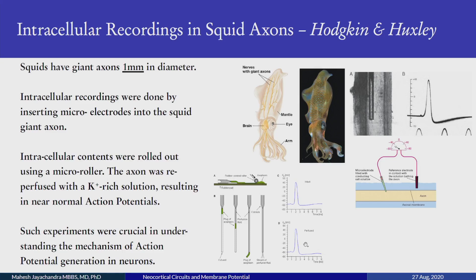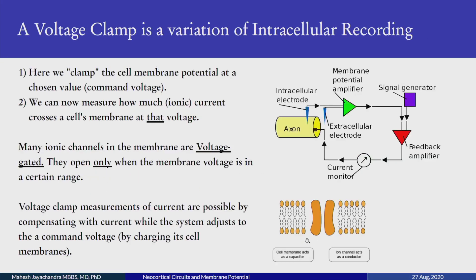These experiments were crucial in understanding the mechanism of action potential generation in neurons. Further, Hodgkin and Huxley developed a voltage clamp technique, which is a variation of intracellular recording. Here we have the electrode inside and we clamp the cell at a particular voltage — called a command voltage. At that voltage, with the appropriate signal conditioning circuit, we record how much current crosses the membrane. This is ionic current — in neurophysiology, charges are transferred by ions and not by electrons.